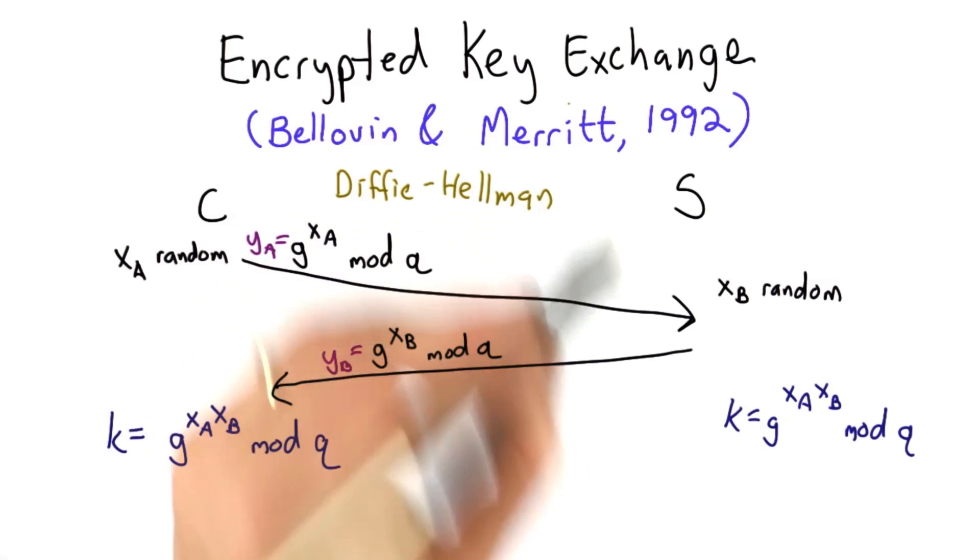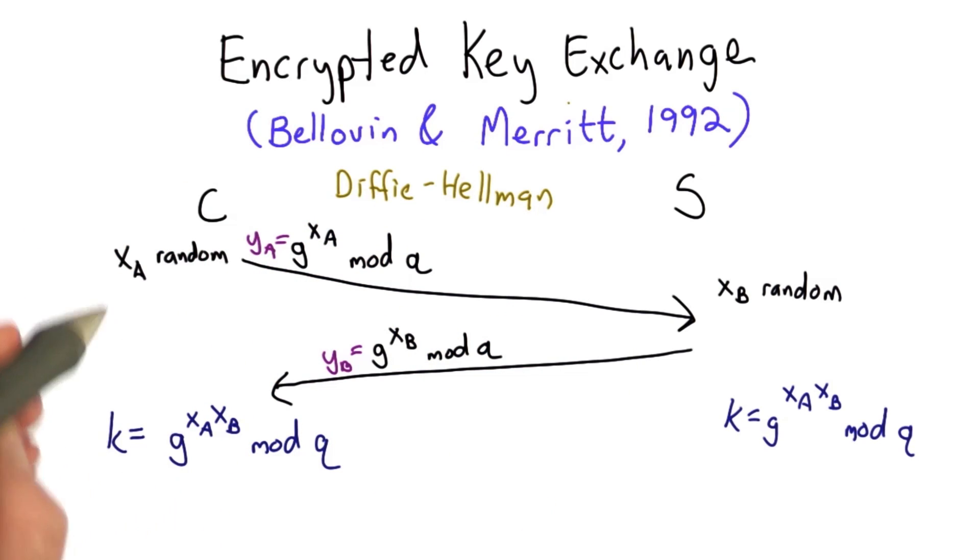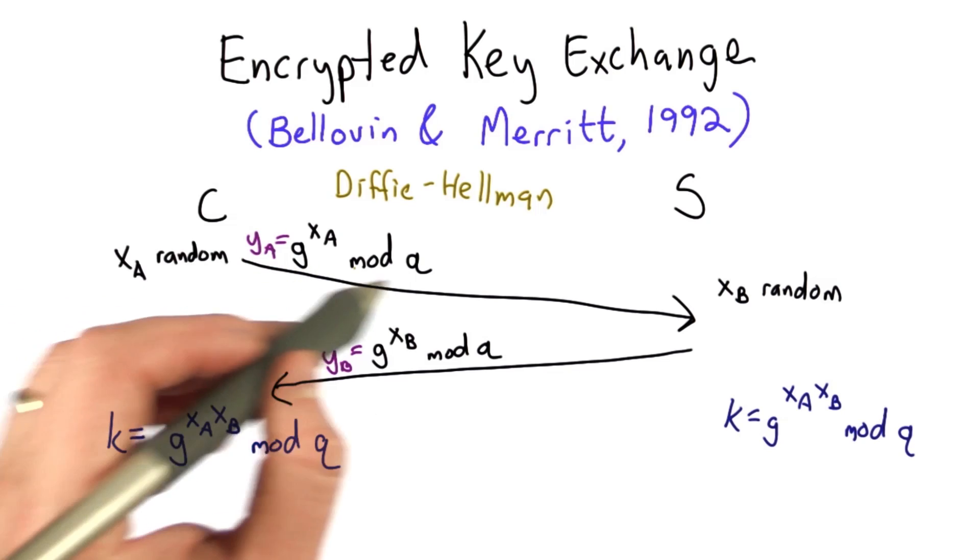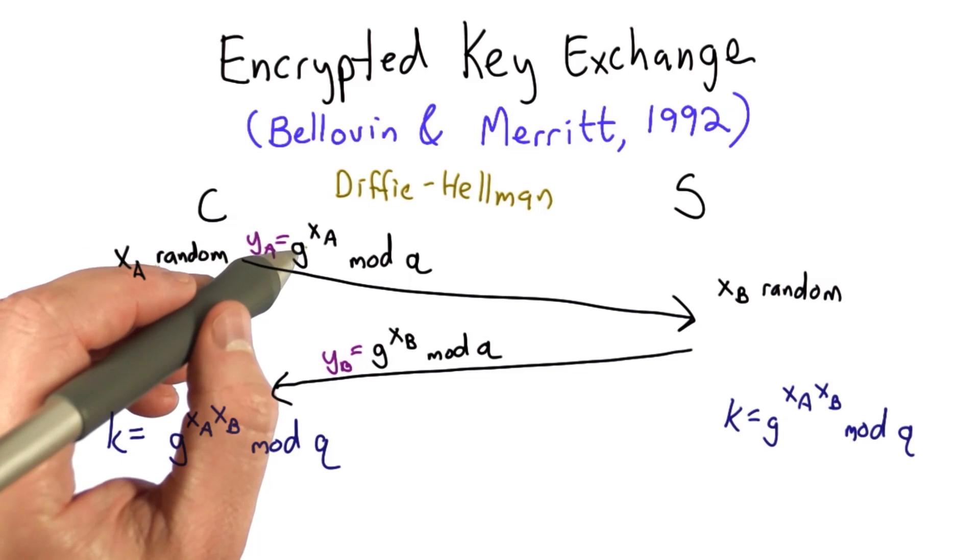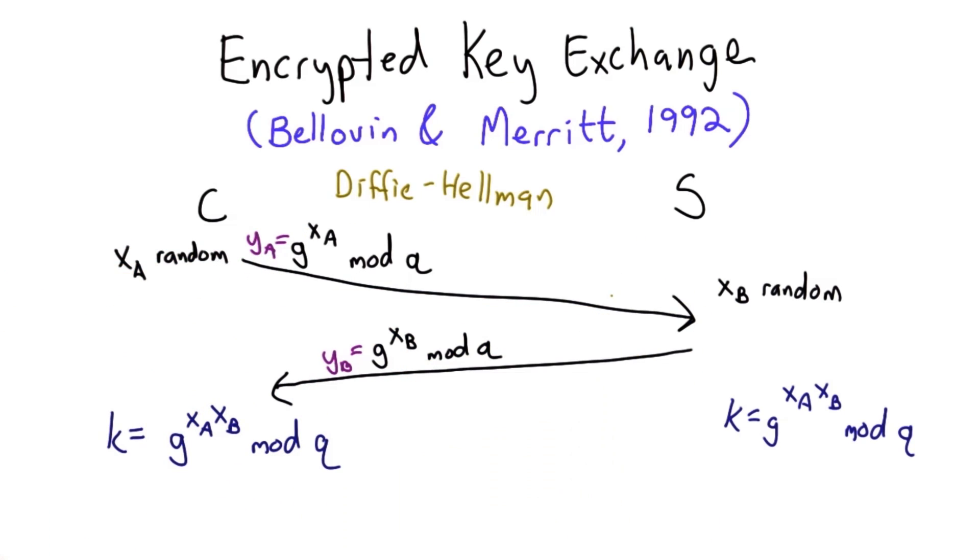This protocol starts from Diffie-Hellman, which you should remember from Unit 3. Each party starts after they've agreed on the generator and some modulus. The client picks a random xa value, raises g to that power, and sends the result to the server.